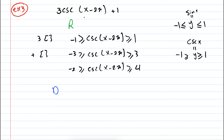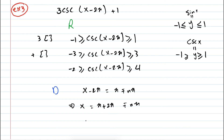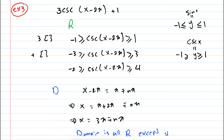How about the domain? We find the vertical asymptotes for cosecant the same way as for sine and cosine. Setting x minus 2π equal to π ± nπ, we get x = π plus 2π plus or minus nπ, which simplifies to x = 3π ± nπ, n being a natural number. So the domain is all the real numbers except x equal to 3π ± nπ.